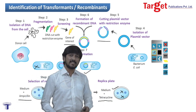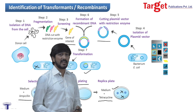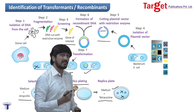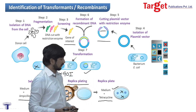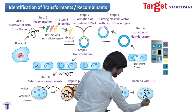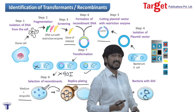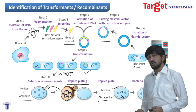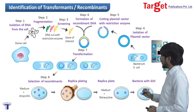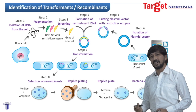These two colonies are missing because they are sensitive to tetracycline. This is because we inserted our gene of interest within the sequence of the tetracycline resistance gene, disrupting it. These are therefore the colonies which contain our gene of interest — the recombinants — and they are then cultured. This is how we identify recombinants from non-recombinants.